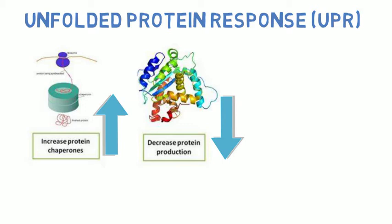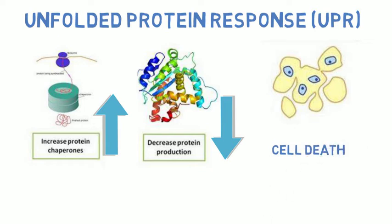If these two options do not correct the stress response and the UPR has been active for some time, then the cell will take an extreme measure. The cell will initiate regulated cell death to remove itself from the organism.